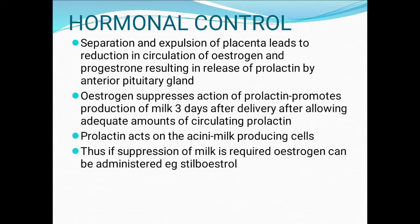First, hormonal control: separation and expulsion of the placenta leads to reduction in circulation of estrogen and progesterone, resulting in release of prolactin by the anterior pituitary gland. Estrogen suppresses the action of prolactin. Three days after delivery, after allowing an adequate amount of circulating prolactin, prolactin acts on the acini — milk protein-producing cells.